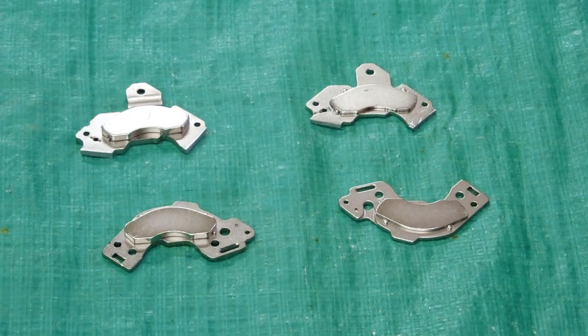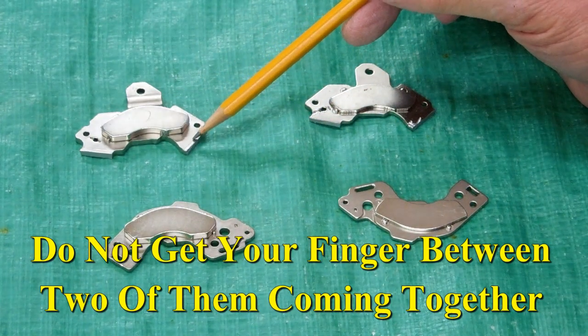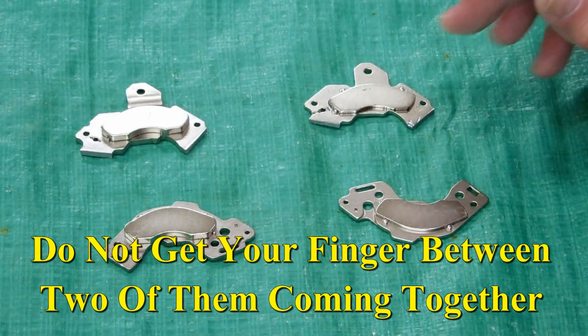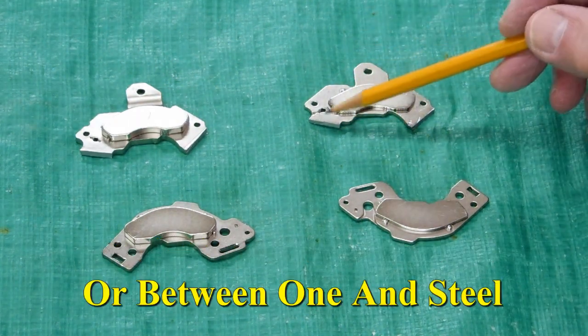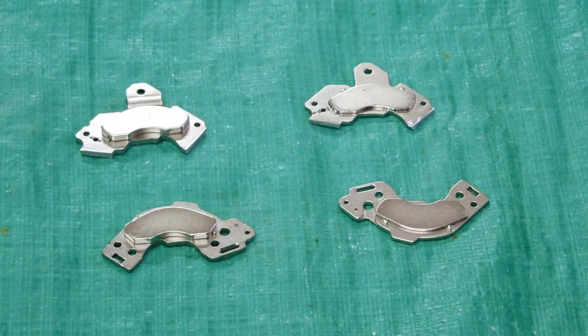I salvaged these magnets from a computer hard drive. There's one pair in each drive and this one had legs that were sticking up at right angles. I just cut those off with a hacksaw. I can use these holes to mount it to a piece of wood.